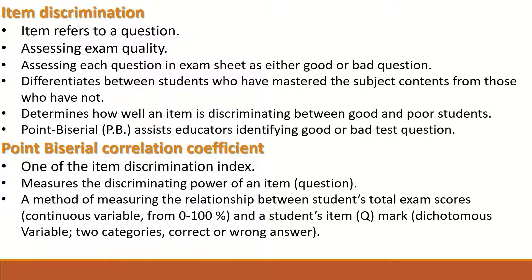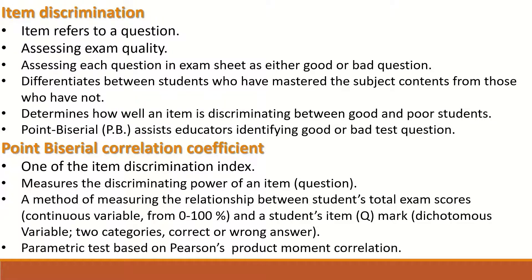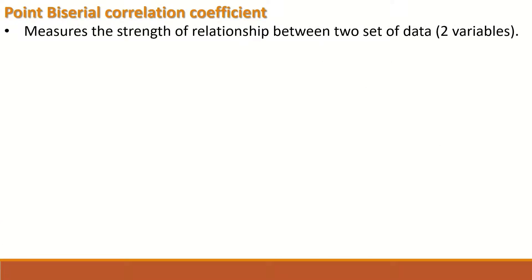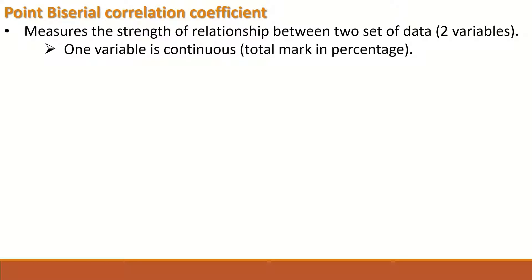It is a method of measuring the relationship between a student's total exam score, which is a continuous variable from 0 to 100, and the student's item mark or score, which is a dichotomous variable — meaning two categories: correct or wrong answer. It measures the strength of the relationship between these two sets of data, correlating two variables with each other.